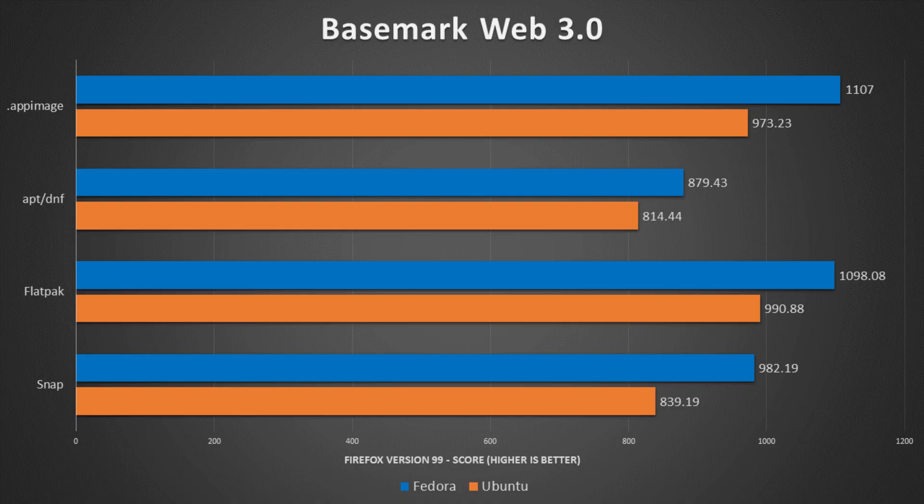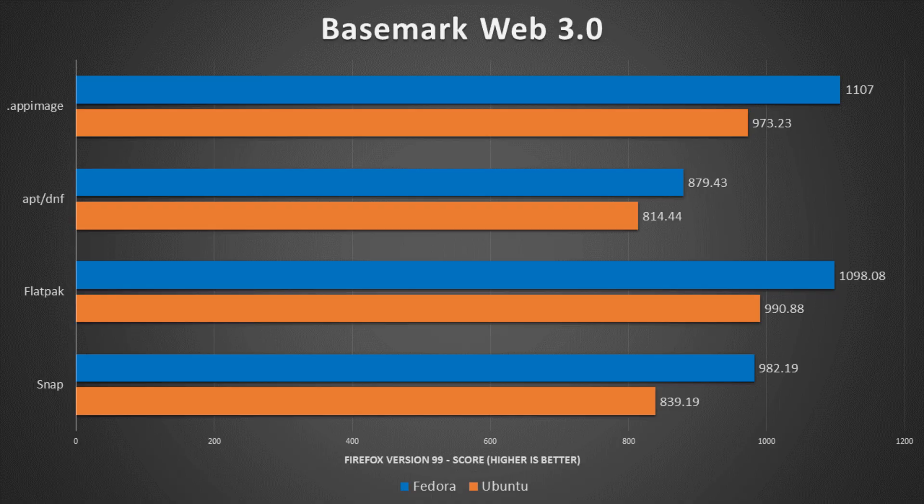The very first benchmark we ran was Basemark Web 3.0, which includes various system and graphics tests using web-recommended features and gives us a comprehensive performance score. Pulling up this first graph, we can see some substantial differences between packaging formats and between Fedora and Ubuntu. This was done on Firefox version 99 across all platforms. AppImages and Flatpaks are neck and neck, with AppImages performing slightly better on Fedora and Flatpaks slightly better on Ubuntu. On Fedora, Snaps actually had an advantage over the DNF installation, and on Ubuntu, Snap still had an advantage but not nearly as much.